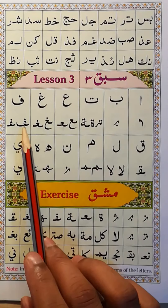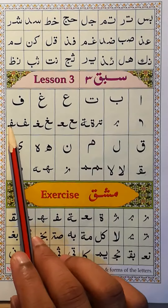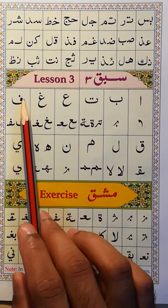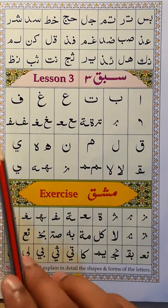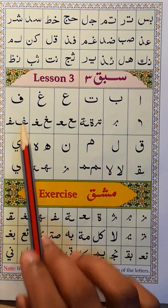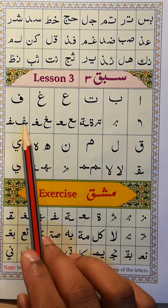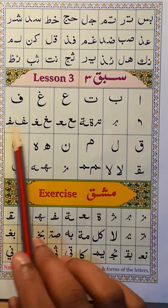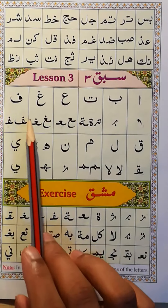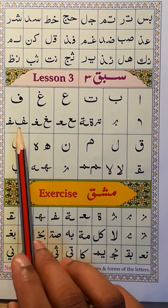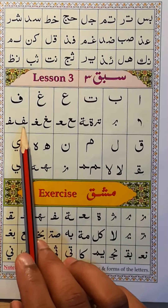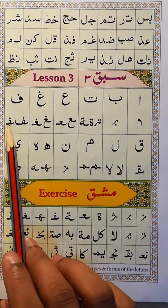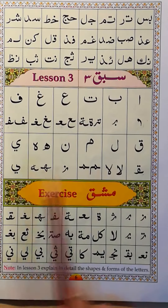Fa, fa, fa. So fa has a round shape of the head. This is fa at the end of the word, this is fa at the middle of the word. But one thing is the same in every shape: the dot is one dot on the top.